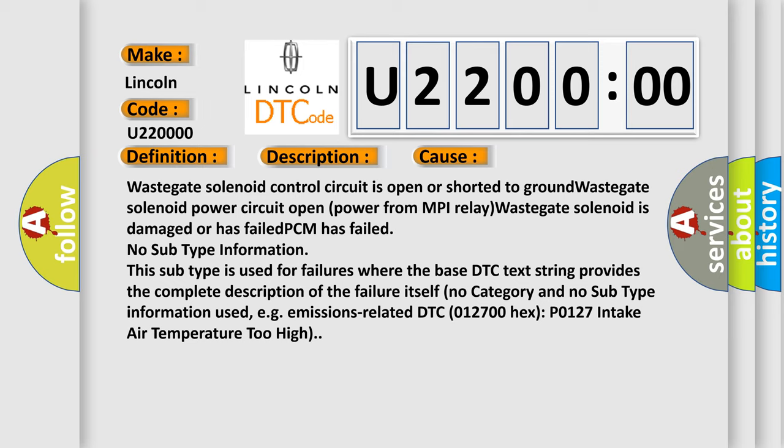No subtype information. This subtype is used for failures where the base DTC text string provides the complete description of the failure itself. No category and no subtype information used, e.g. emissions-related DTC 012700 hex P0127 intake air temperature too high.